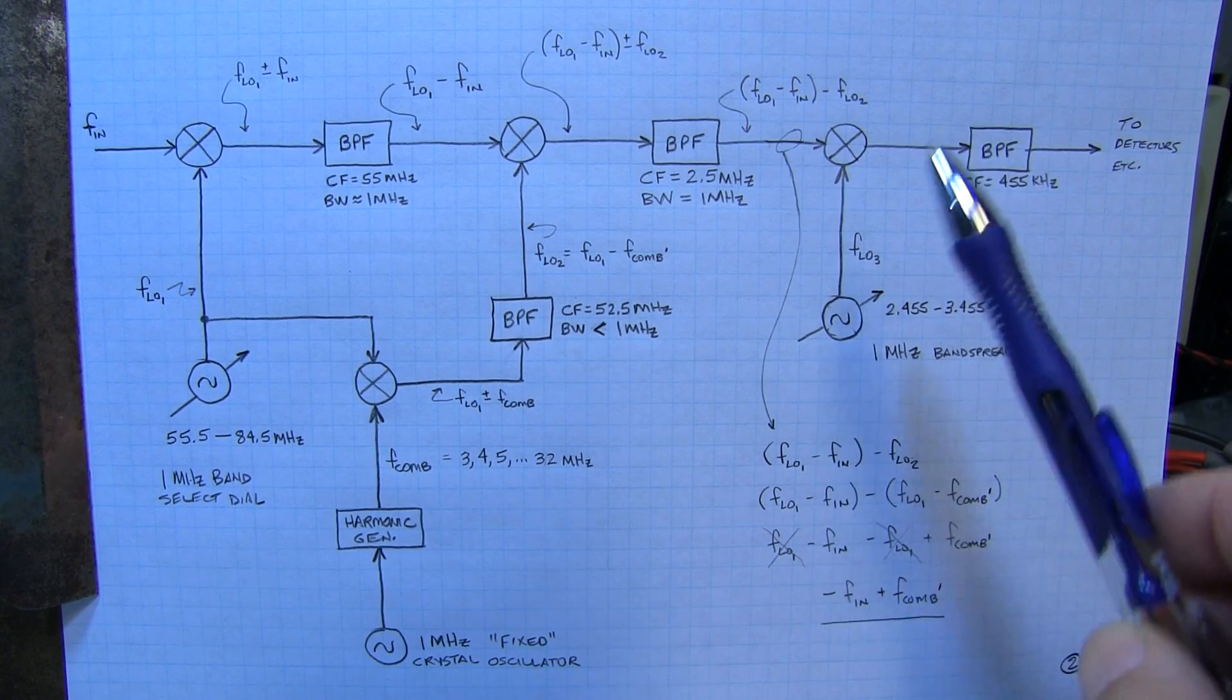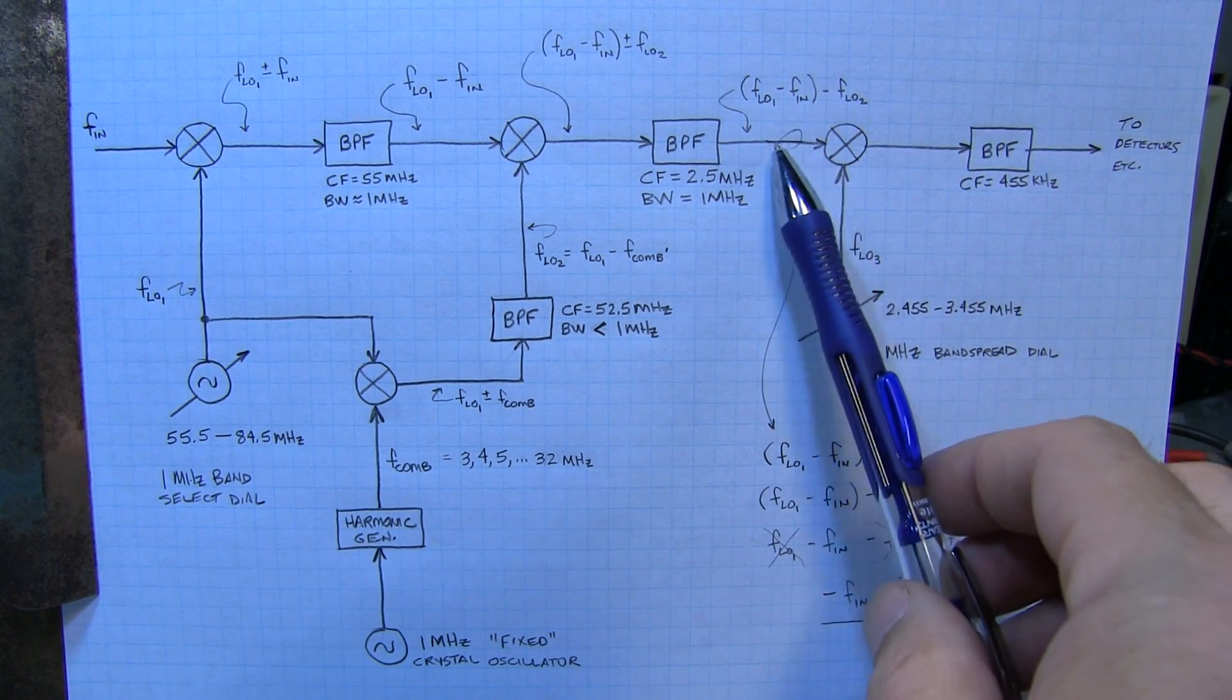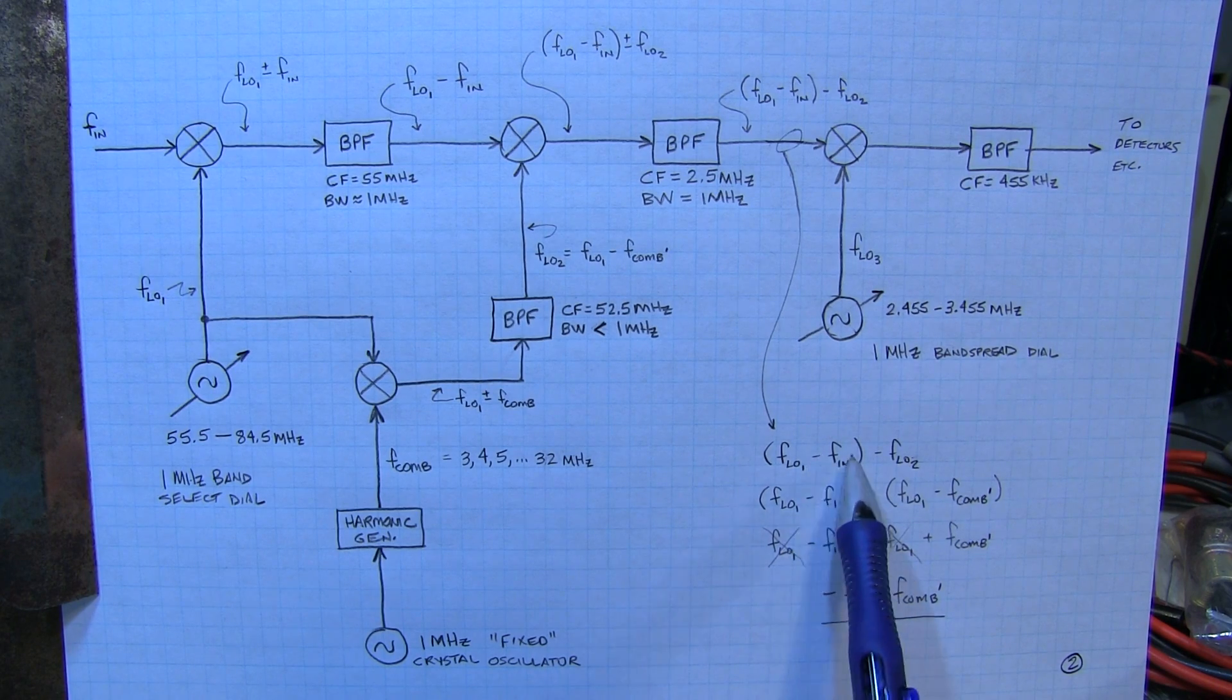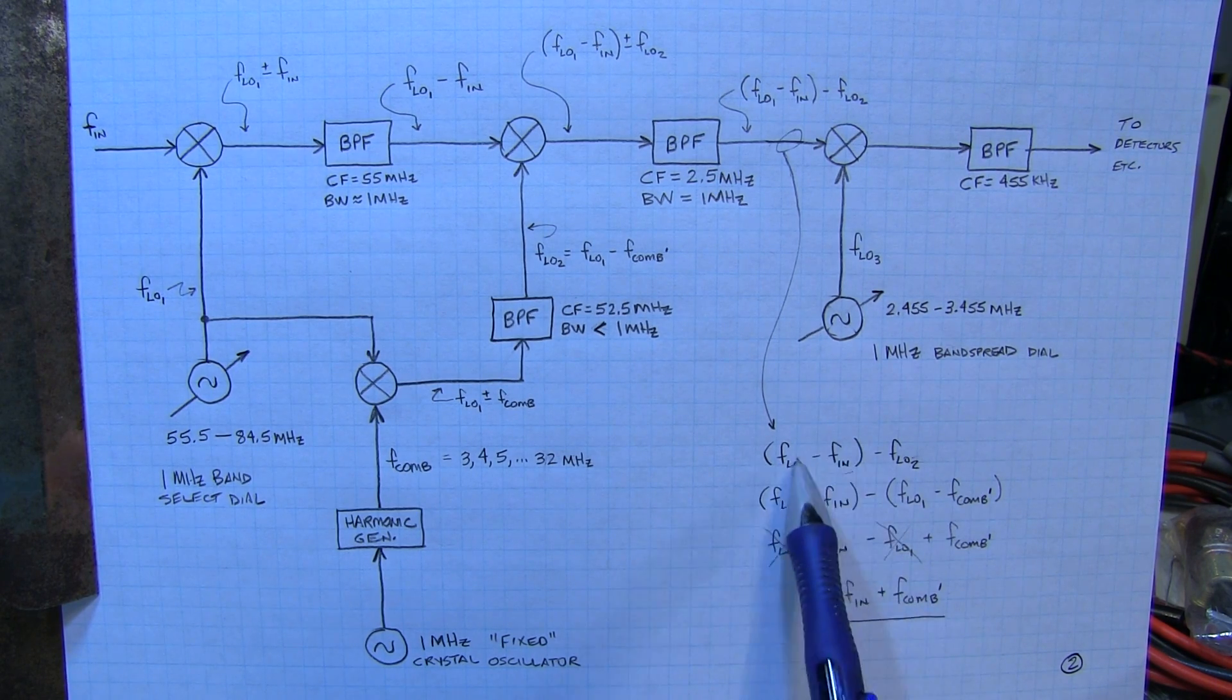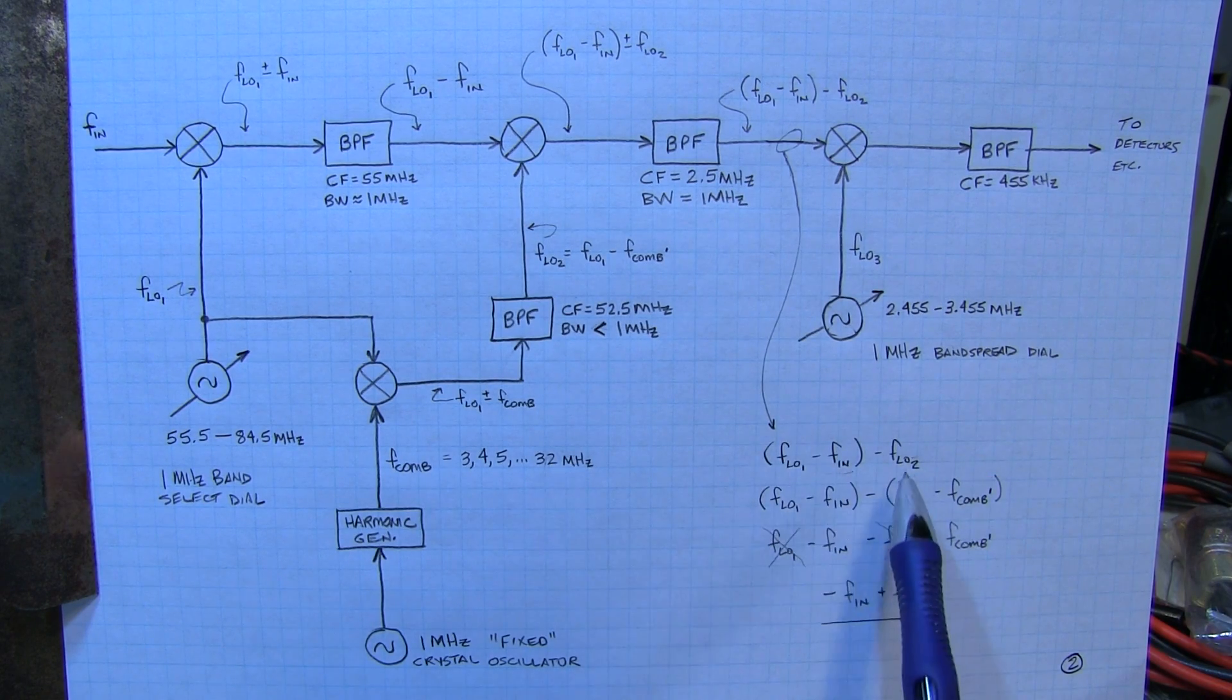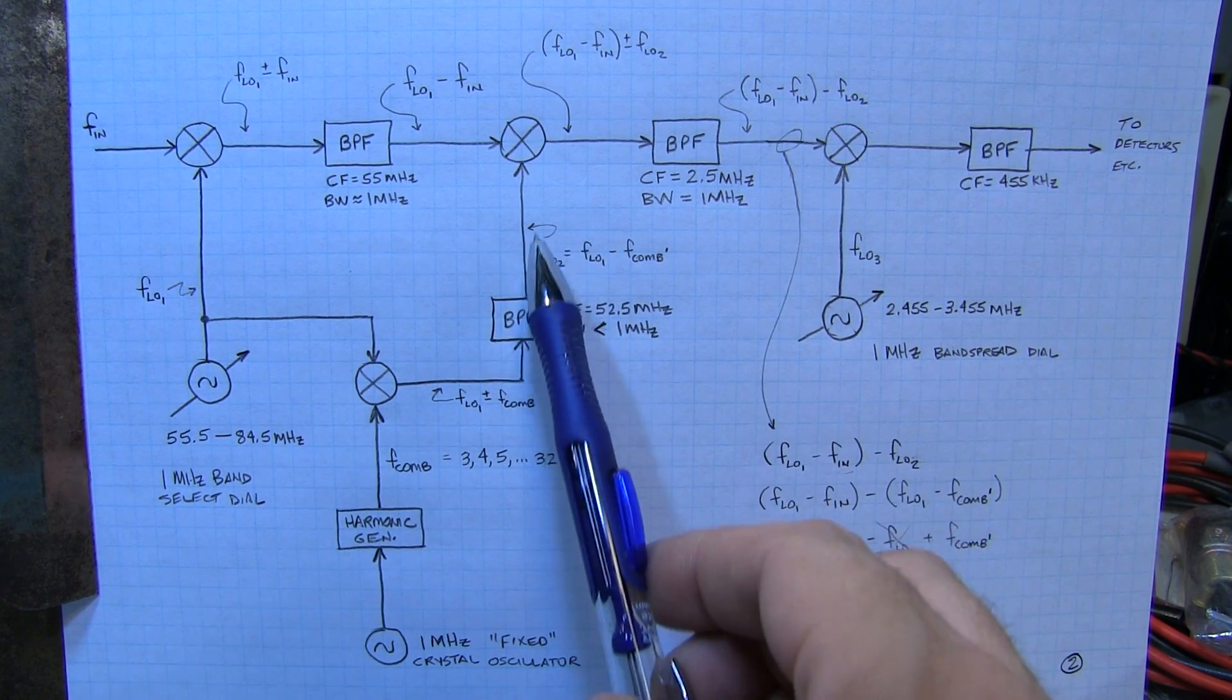So let's take a look at how this canceled the drift. If we take a look at the signal that's here, now that's our FL01 minus FN. So that's the frequency we've got coming in here from our bandpass filter, minus the local oscillator 2 frequency.